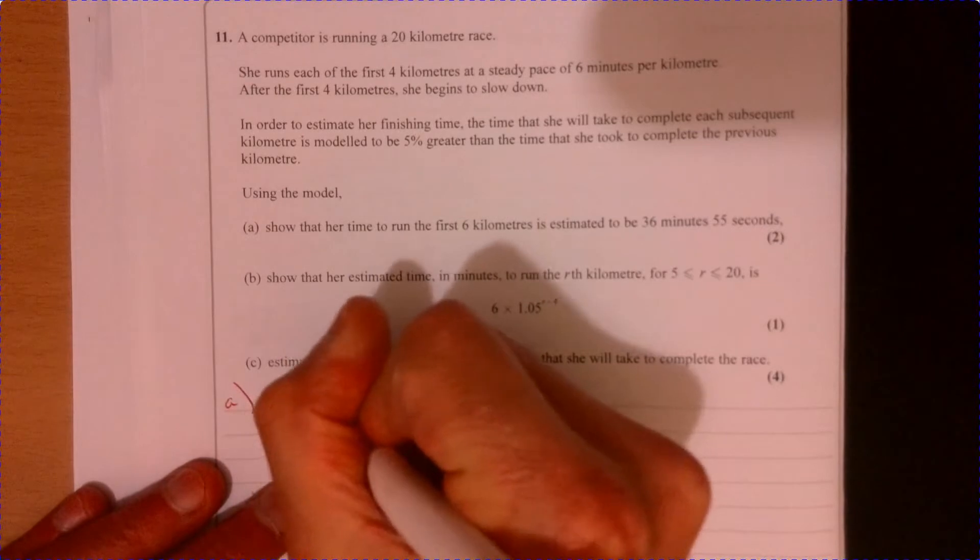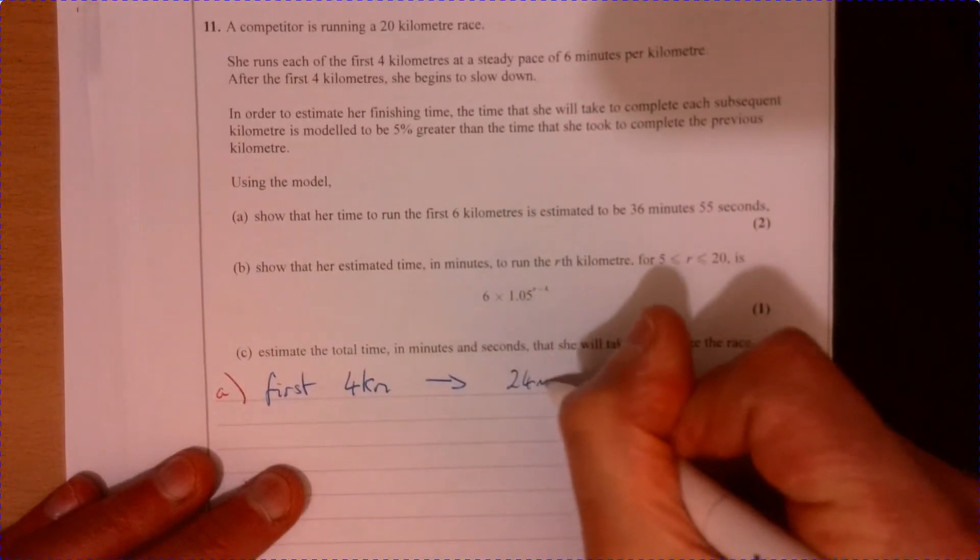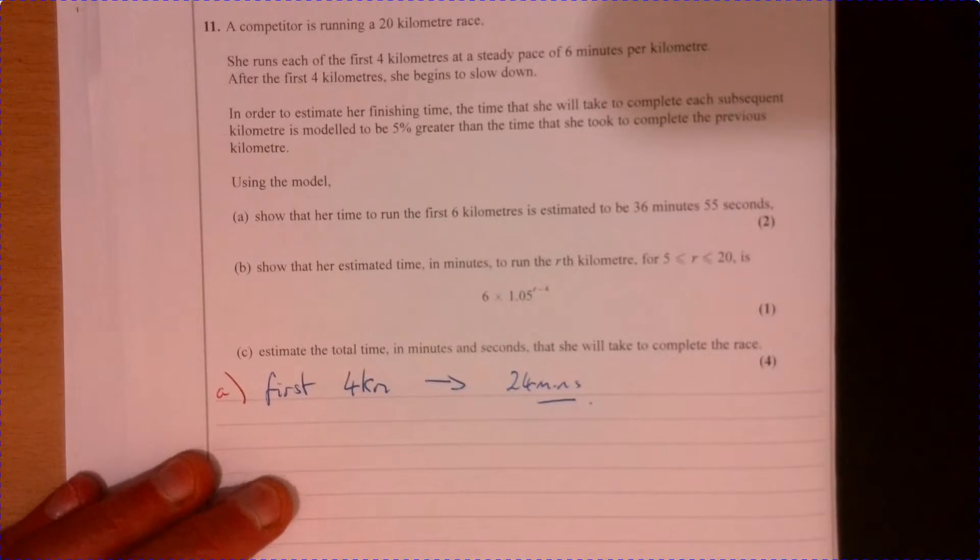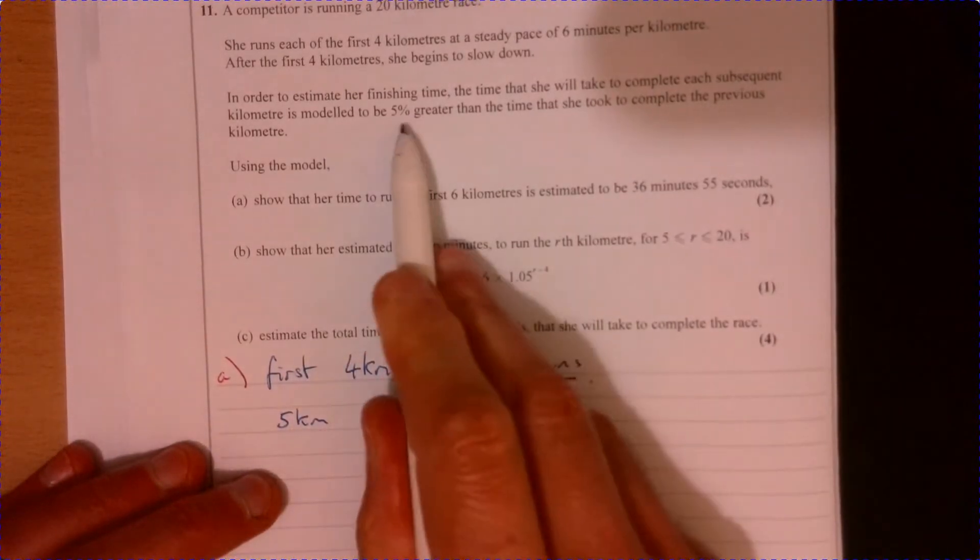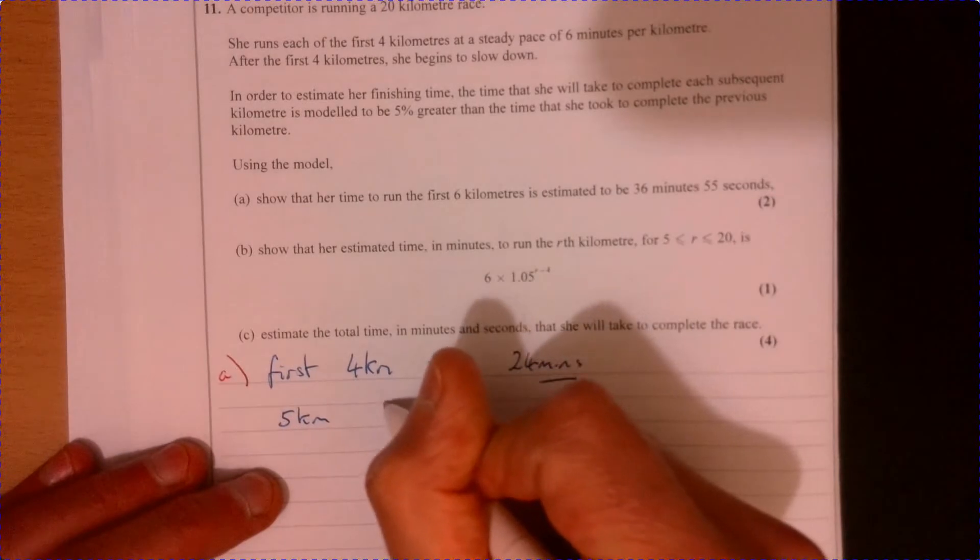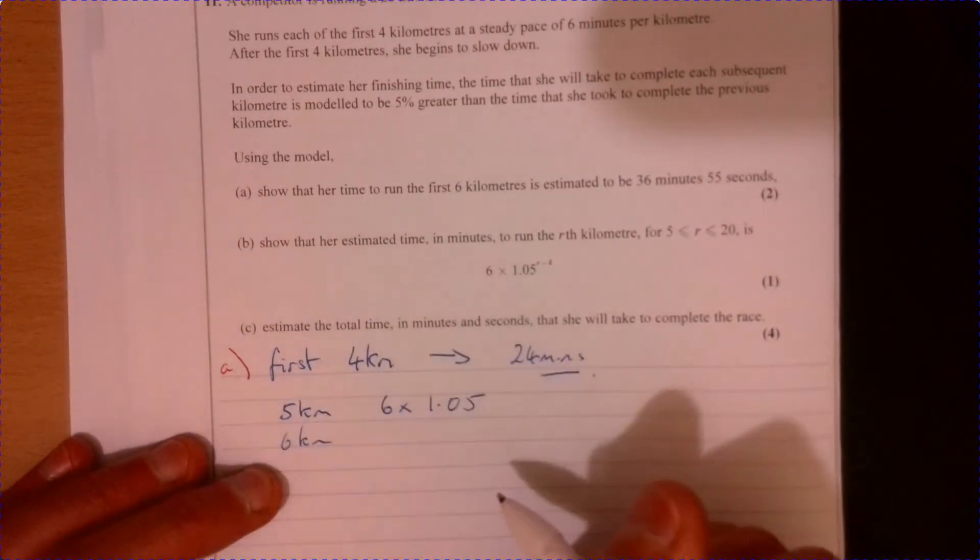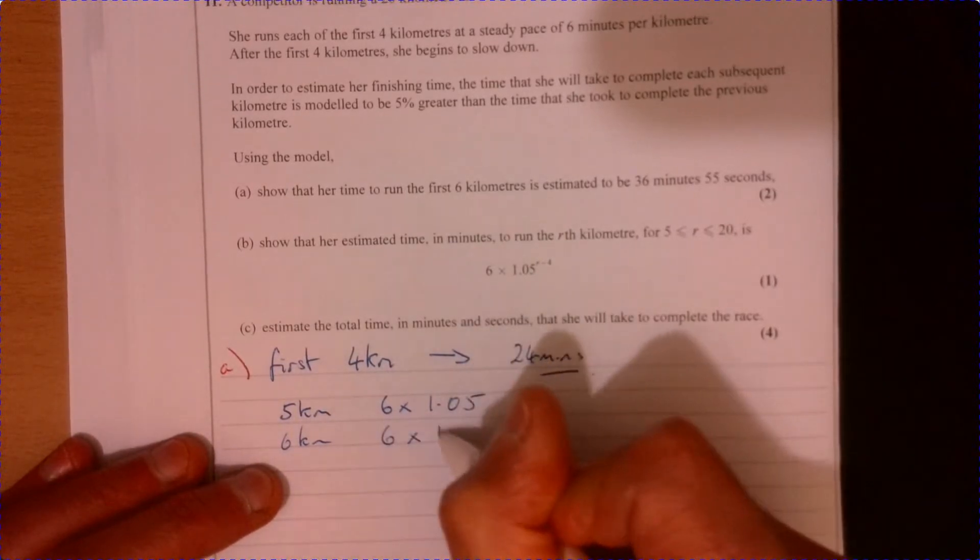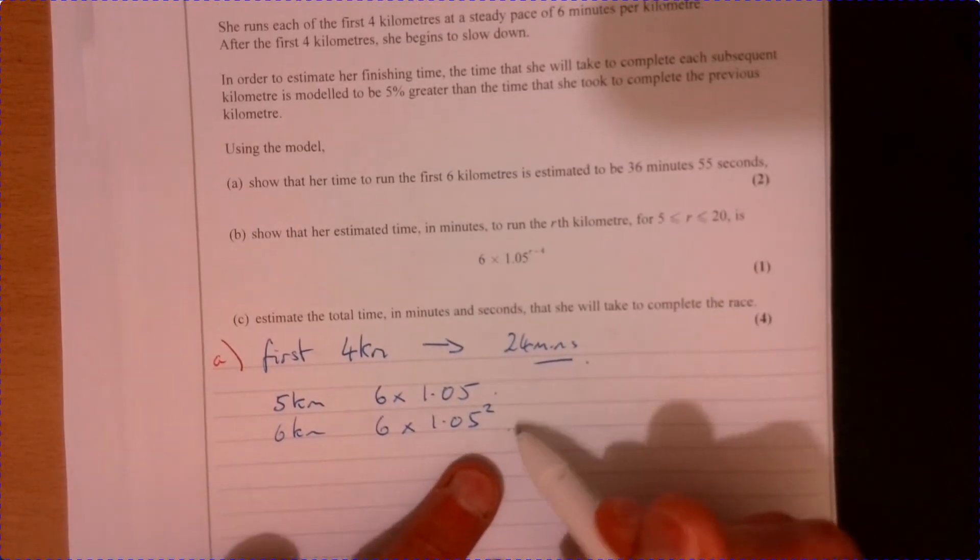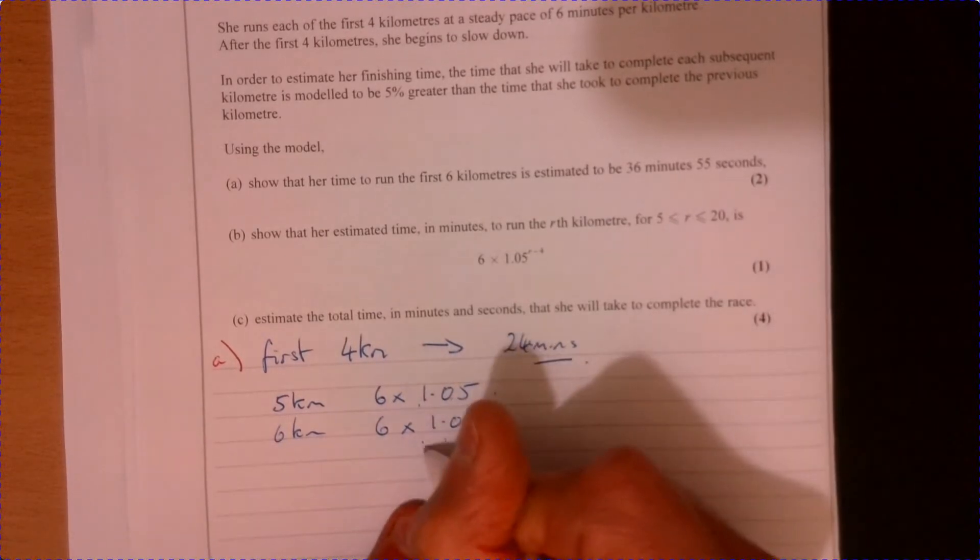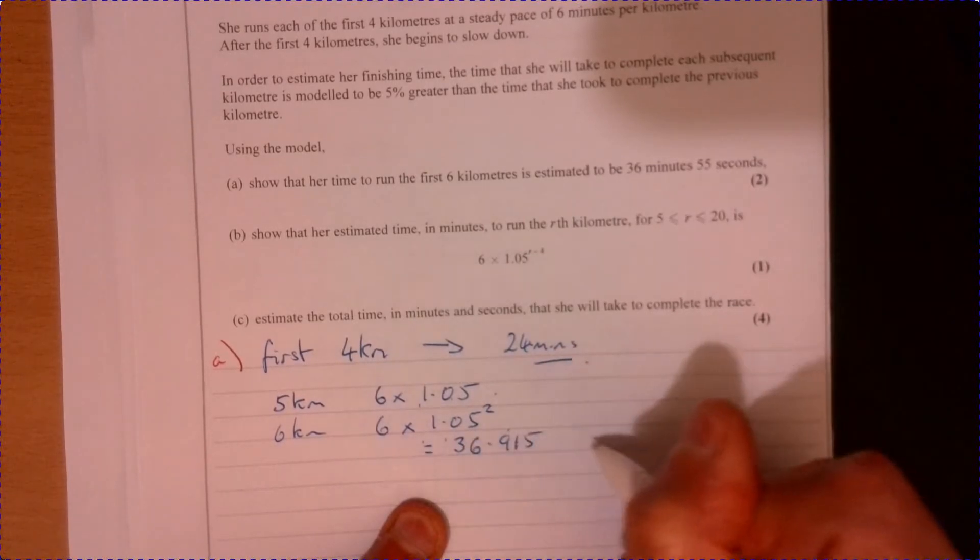So for the first four kilometres, each one's going to take six minutes. So that's 24 minutes. Now five and six. So the fifth kilometre is going to be 5% more. So that's going to be six times 1.05. And the sixth kilometre would be six times 1.05 squared.